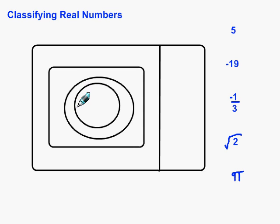This innermost circle is our smallest group of numbers, and that's called the natural numbers. Natural numbers are basically the counting numbers, starting with 1 and going up from there. So natural numbers are 1, 2, 3, 4, 5, and so on.